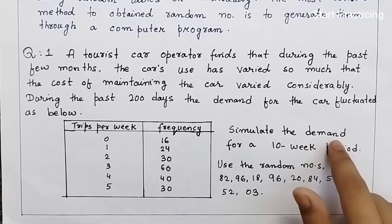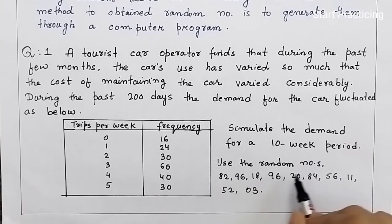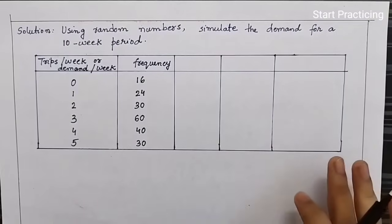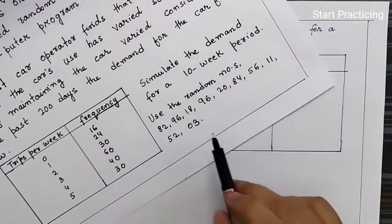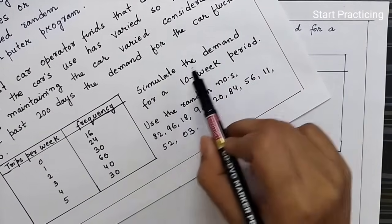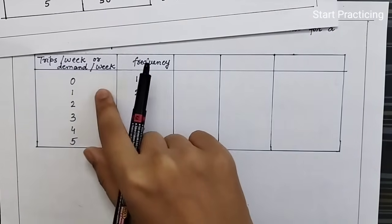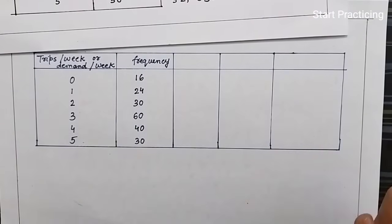We have a table with trips per week and frequency. We need to simulate the demand for a 10-week period using the given random numbers. In the solution, we write trips per week and demand per week. We have noted trips per week and frequency. After this step we calculate probability.